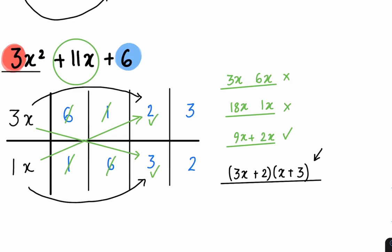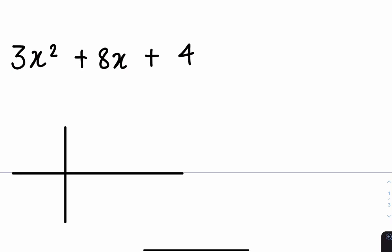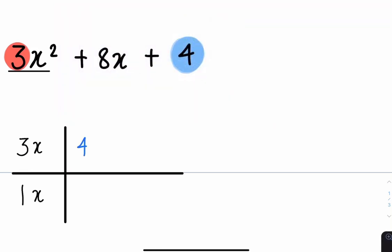For the next example, I do recommend pausing the video and trying to get it yourself if you feel comfortable. Here we have 3x squared plus 8x plus 4. Draw the table, then look at your coefficient, which is a 3 in this case. What are the factors of your coefficient? 3 and 1. Because we have 3x squared, we place an x here and an x here because 3x multiplied by 1x gives you 3x squared. Then you look at your last number, which is a 4. List the factors of 4: 4 and 1, 1 and 4, and 2 and 2.